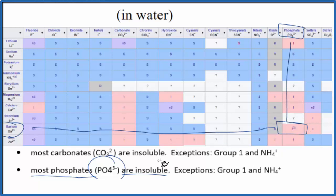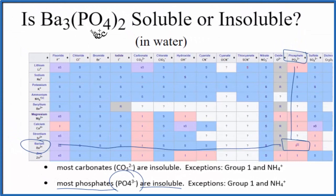So according to the rules, it's insoluble, and also according to the solubility chart, Ba3(PO4)2 is insoluble in water. This is Dr. B answering the question whether barium phosphate is soluble or insoluble in water. It's insoluble.